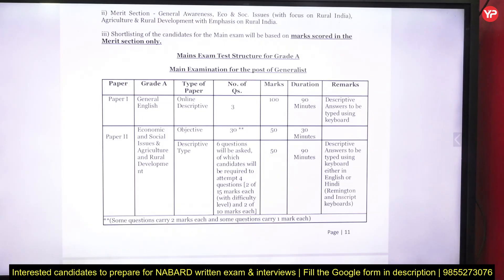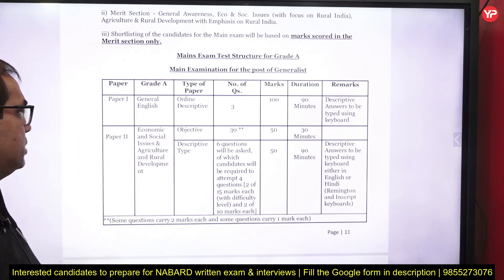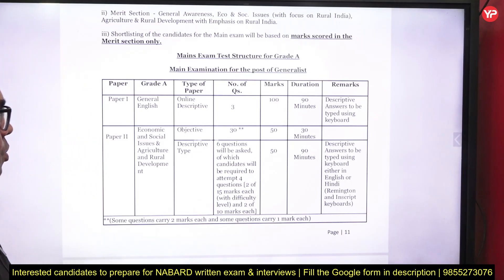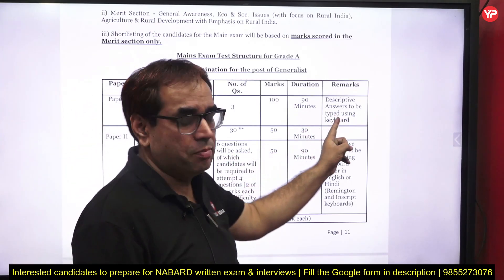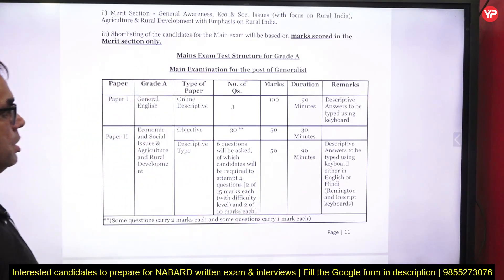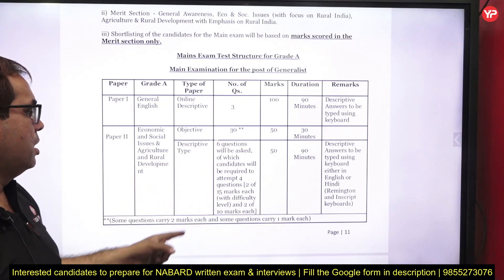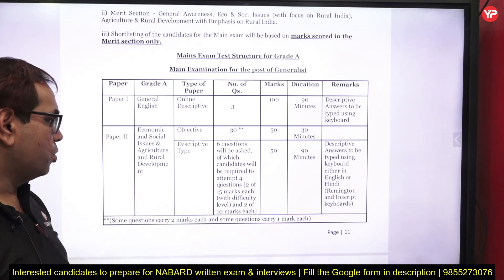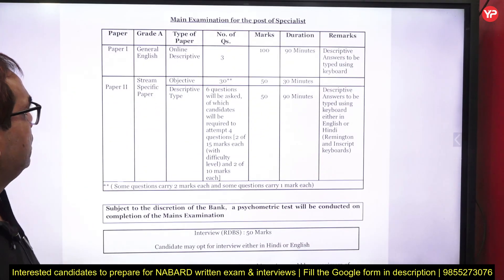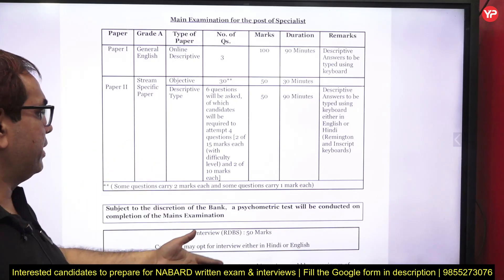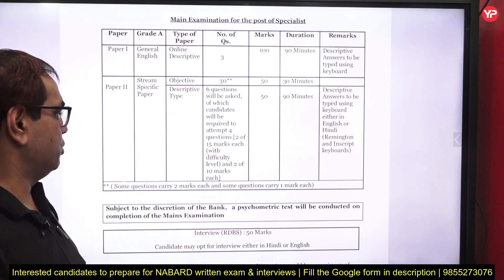For the main exam, Paper 1 for the generalist post is General English — an online descriptive paper with 3 questions for 100 marks in 1.5 hours, typed using a keyboard. Paper 2 covers Economic and Social Issues and Agriculture and Rural Development — 30 objective questions for 50 marks in 30 minutes, plus 6 descriptive questions. For specialist posts, Paper 2 is stream-specific, such as a descriptive paper from the computer science subject.